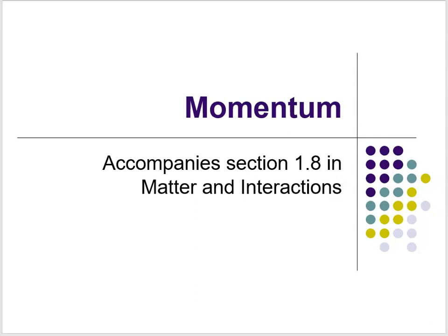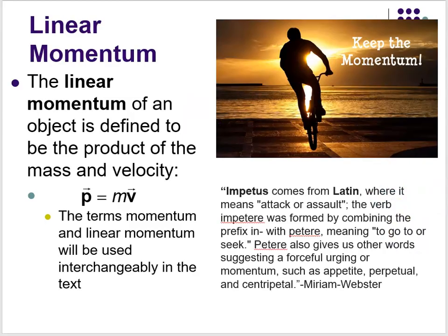To introduce the concept of momentum, which I hope you've seen before: the linear momentum of an object is defined to be the product of the mass and the velocity. So p, which is momentum, is equal to mv, where m is the mass and v is your velocity vector.